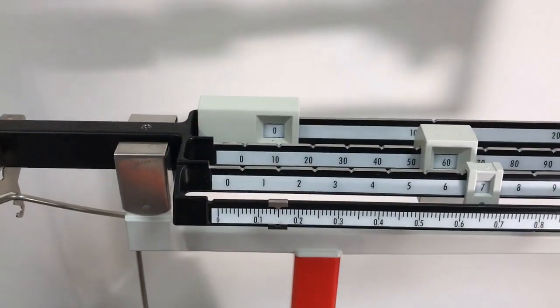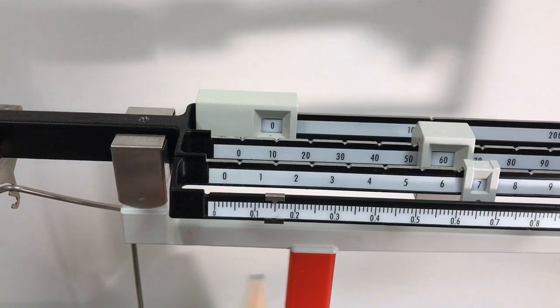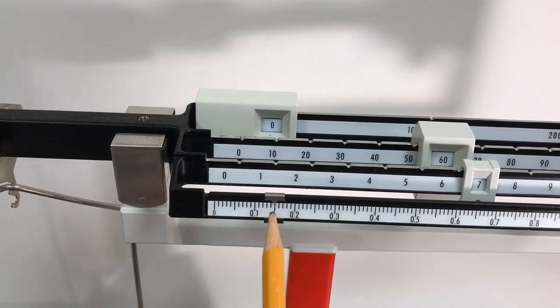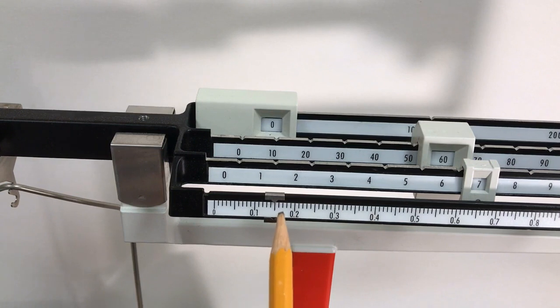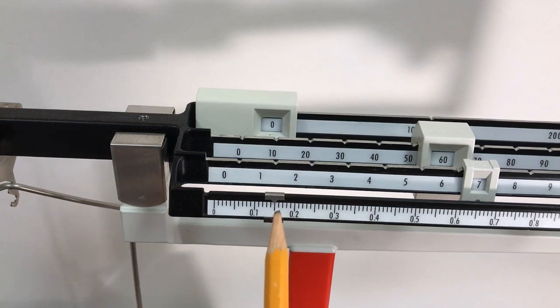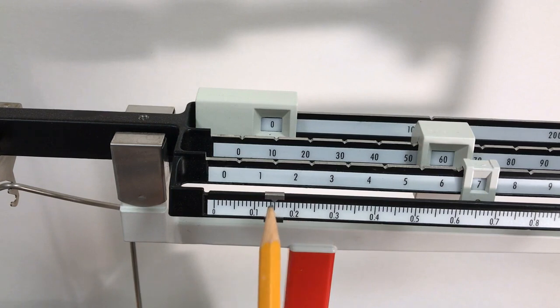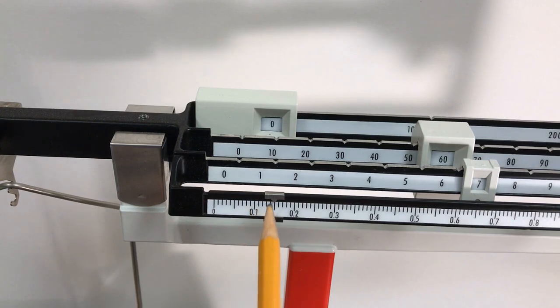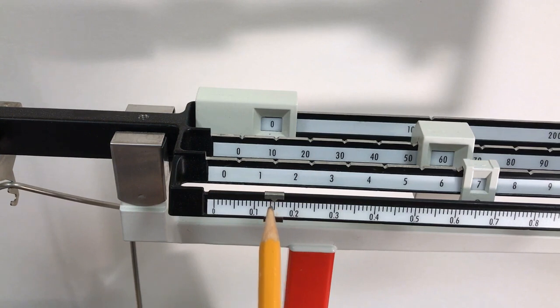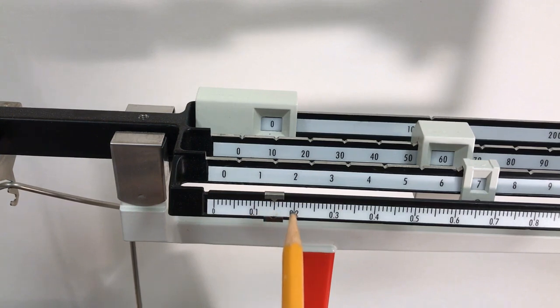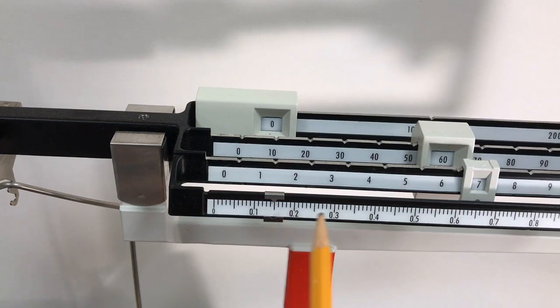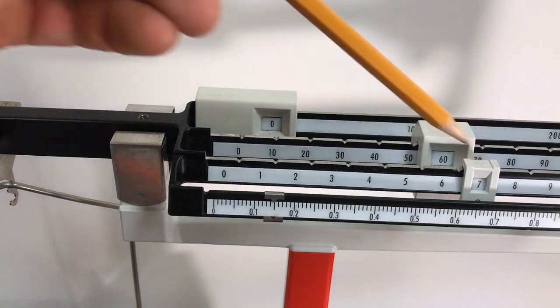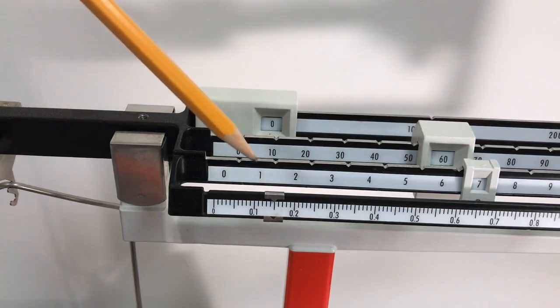And this reading here, the way you're going to read this, is we have every little minor line here is a hundredth of a gram. And when we're talking hundreds, we're talking hundredths. It's point zero one is one hundredth, right? So this is 0.1. And then we have five little lines over from 0.1. So it's a lot like money. So this is like 10 cents. This is like 20 cents. So this would be 0.15. So my total reading here, 67.15.